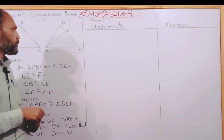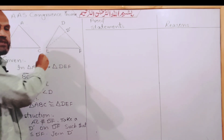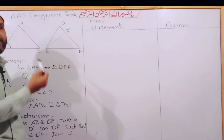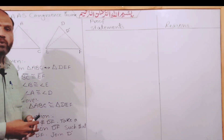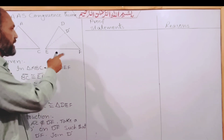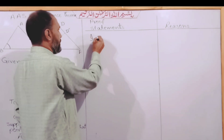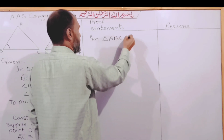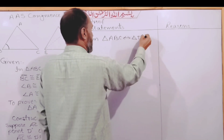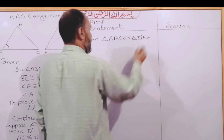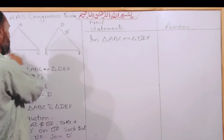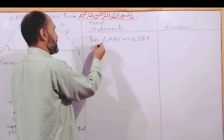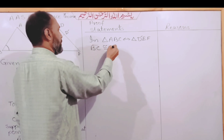Since the two sides are congruent, we can confirm that DF side and AC side are congruent. The first thing we wanted to establish was that DF side equals AC. Now, looking at the two triangles, BC is congruent to EF — this is congruent by the given conditions.